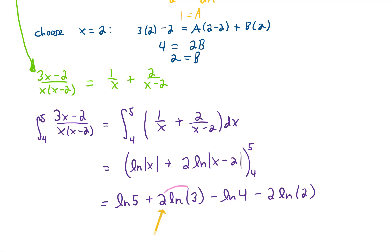To do that, recall that you can take a coefficient in front of a logarithm and put it up on the power of the argument inside the logarithm. That means with the second term, we're going to have the natural log of 3 squared, which is the natural log of 9. And with this last term, we're going to have the natural log of 2 squared, which is the natural log of 4.